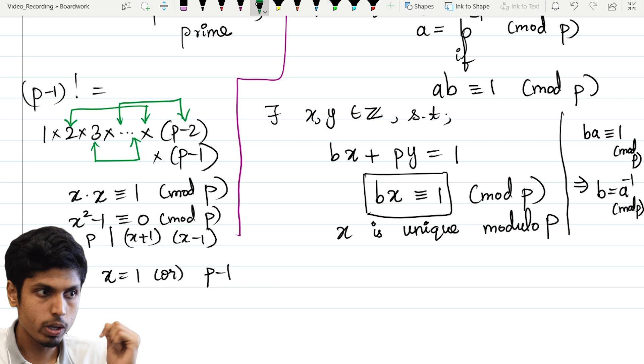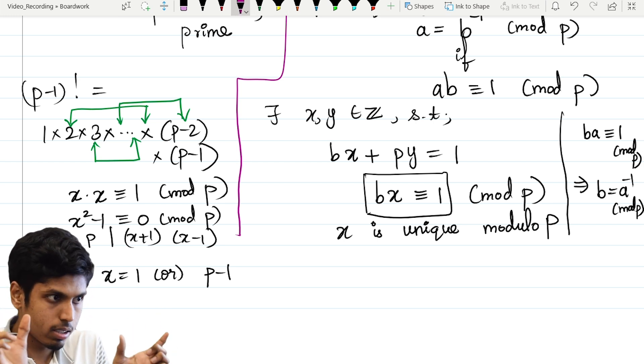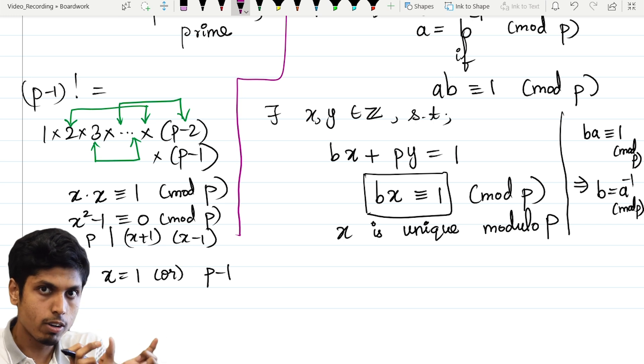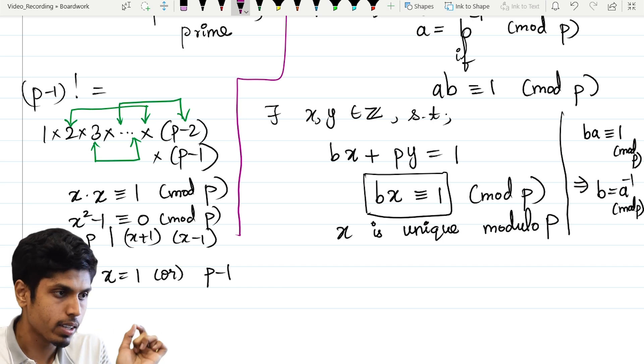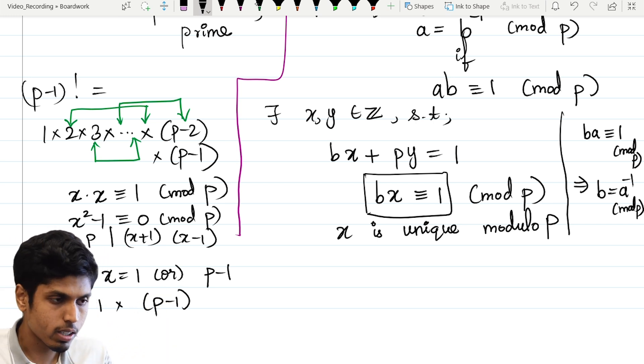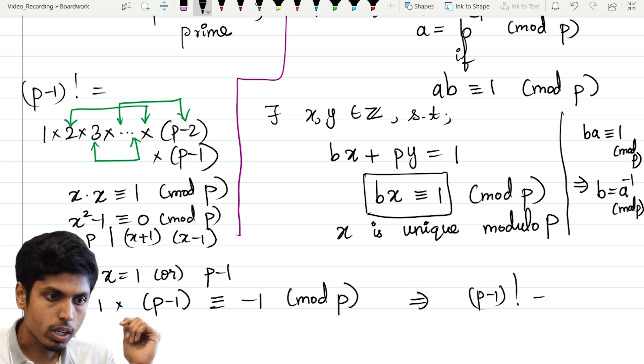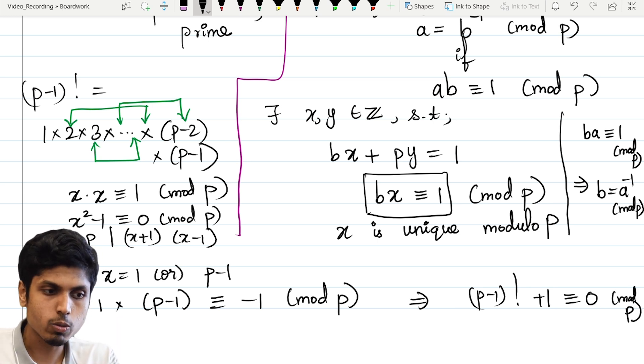Right? Because I don't have two 1s or two p minus 1. So that's why all these green pairs, the green arrows, each green pair will multiply to give 1. And only that remains would be 1 into p minus 1. All of them will turn up to 1 and 1 into anything is 1. Right? So hence, it is congruent to p minus 1, which is essentially congruent to minus 1 mod p. So which means that p minus 1 factorial plus 1 is congruent to 0 mod p. Ta-da! We have proved that p divides p minus 1 factorial plus 1. So this is the sketch of the proof.